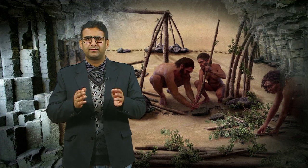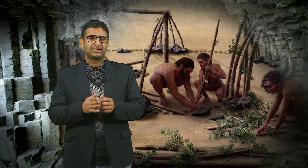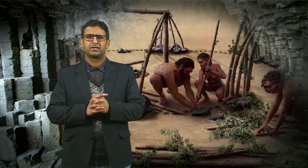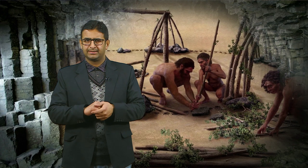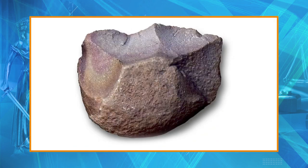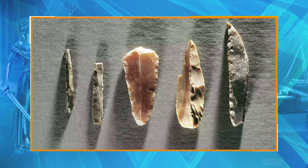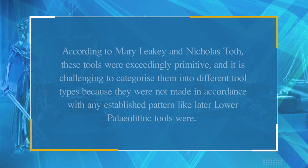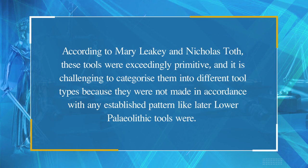Let us now move towards the geographical areas in the world context and try to understand the tool typology and technology involved in the fabrication of these stone tools. Simple stone tools made from pebbles or lava cobbles were discovered at Olduvai and other sites in East and North Africa. Several tools, including choppers, scrapers, burins and hammer stones, were fashioned from a single pebble by striking it with a large stone near the pebble's natural edges to remove flakes. According to Mary Leakey and Nicholas Toth, these tools were exceedingly primitive and challenging to categorize into different tool types, as they were not made in accordance with any established pattern like later lower Paleolithic tools.